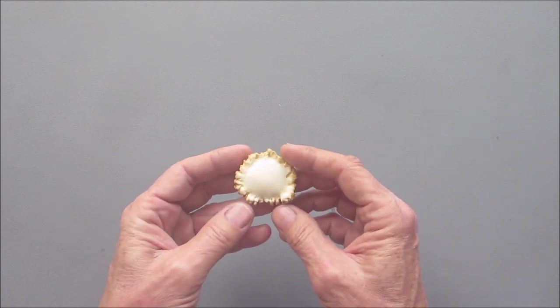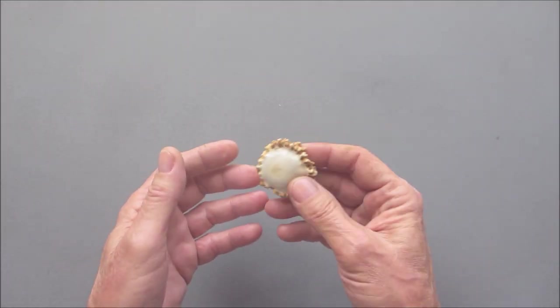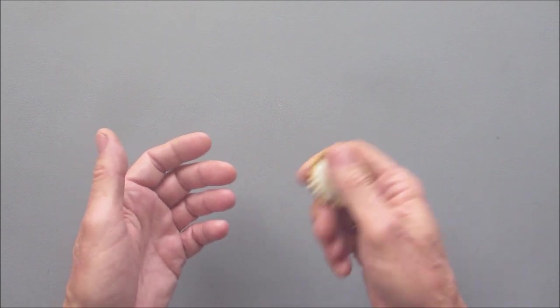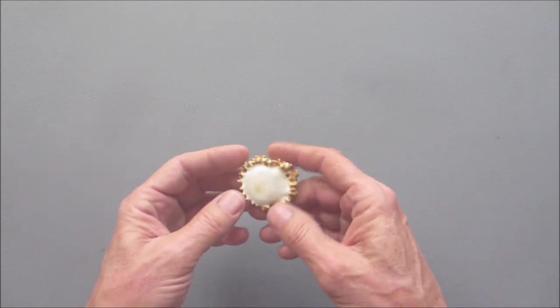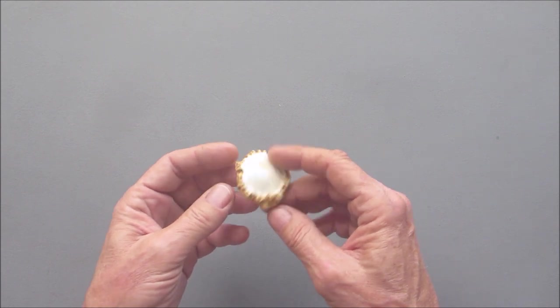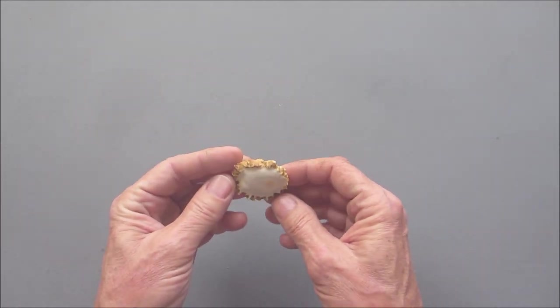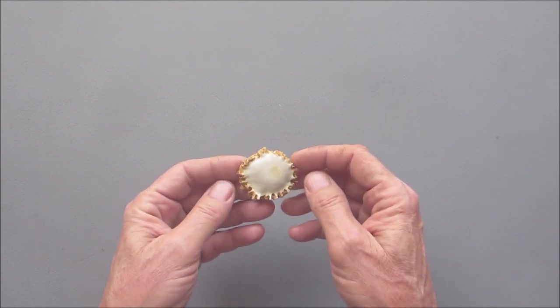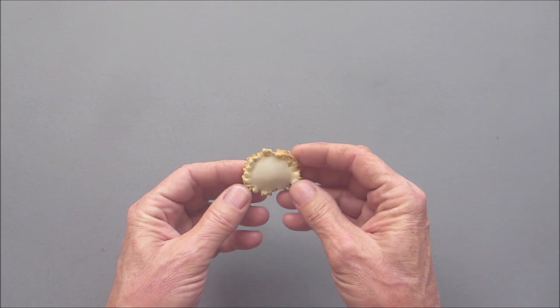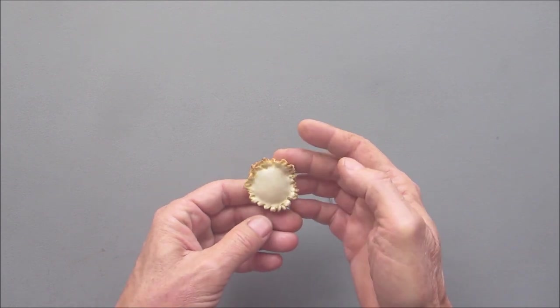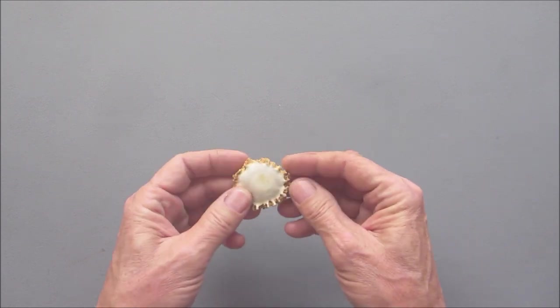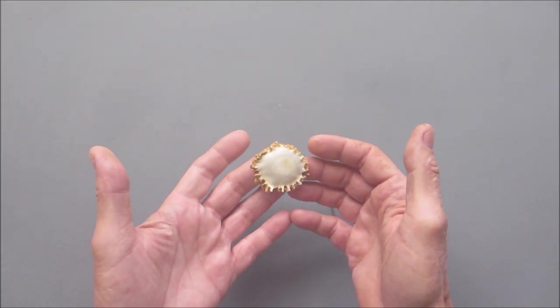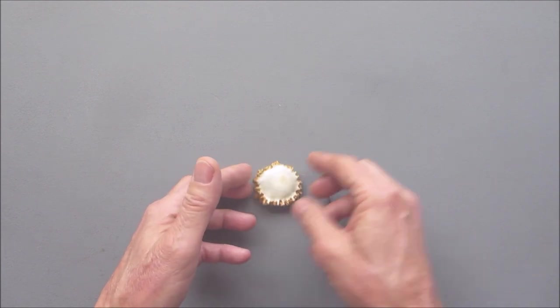Now at this point you could polish this up and just leave it as is and have it as a little good luck charm or whatever you wanted, but we're going to go a little further. So what I need to do is figure out what orientation I'm going to want this and what side.